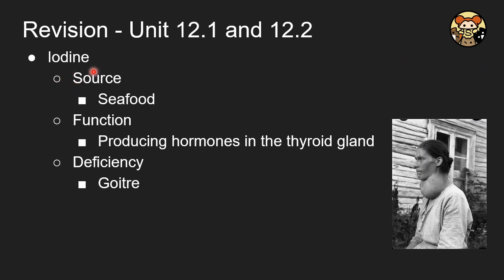For iodine, the source is seafood. The function is to produce thyroid hormones. If we don't have enough iodine, we will suffer from goitre, as shown in the diagram.